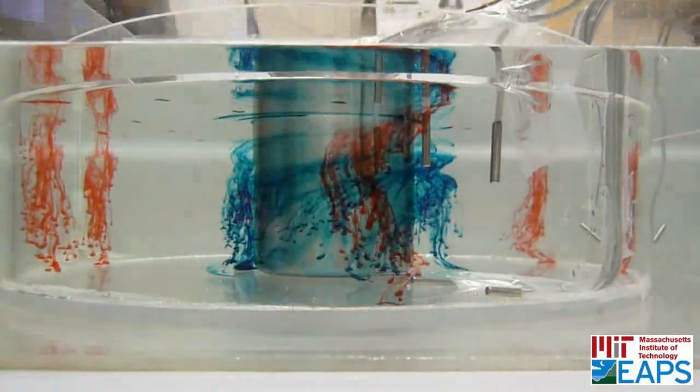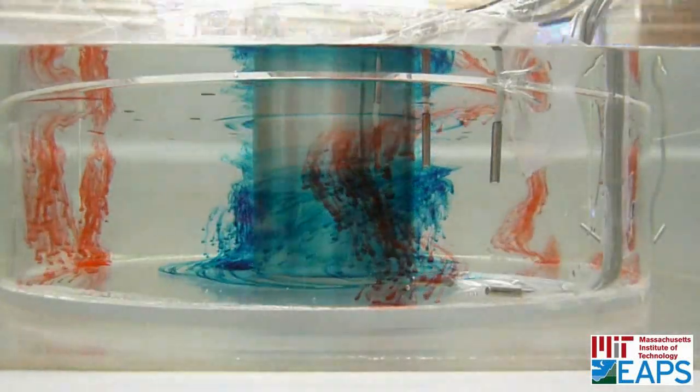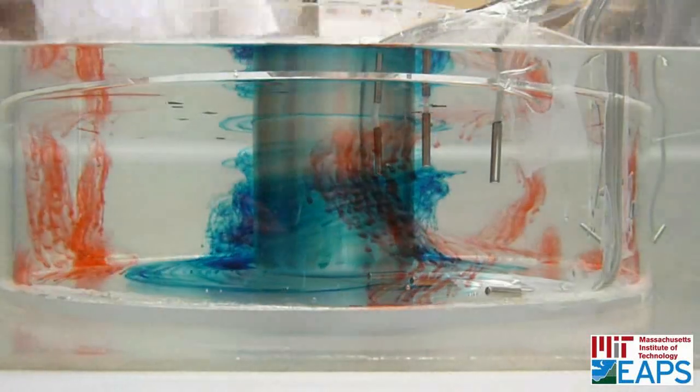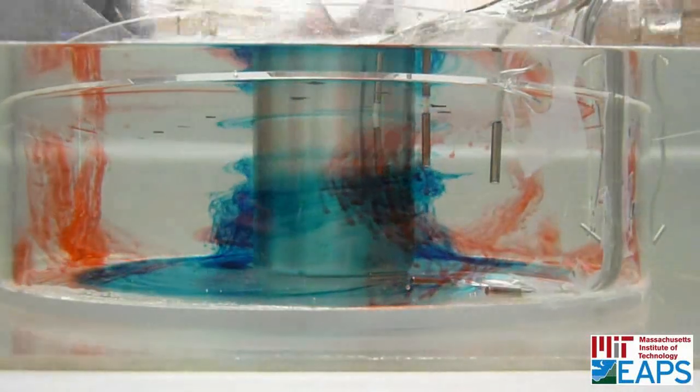We can see now that the dye is being injected. Near the poles, that is the cooled region, we injected blue dye. On the outside, we injected red dye.